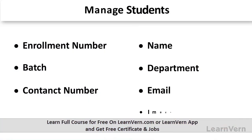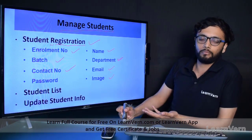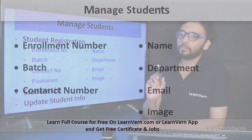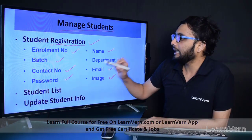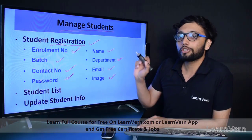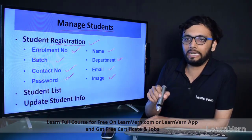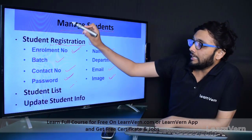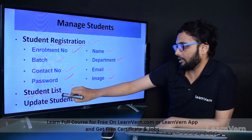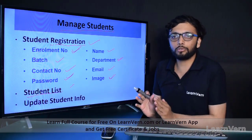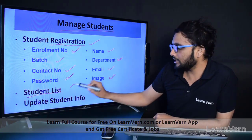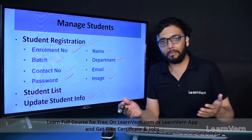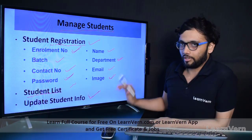Then email of the student, then image - if you want to put the image of the student to identify them easily, that's fine. I am putting the image of the student. Last but not least, password - password is mandatory. By enrollment number and password, the student is allowed to login, because enrollment number is always unique and the password is set by the user. The registered students will be displayed in the student list, and there's also update student info to change contact number, password, email, or image.